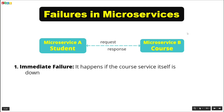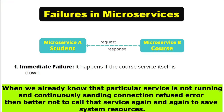But the problem here is if the course microservice is down and even if we make 10 calls, it still throws the same exception. Then why should we send a request the 11th time? It's a high probability that the service might throw the same exception. So we have the overhead of making these repetitive failing calls.